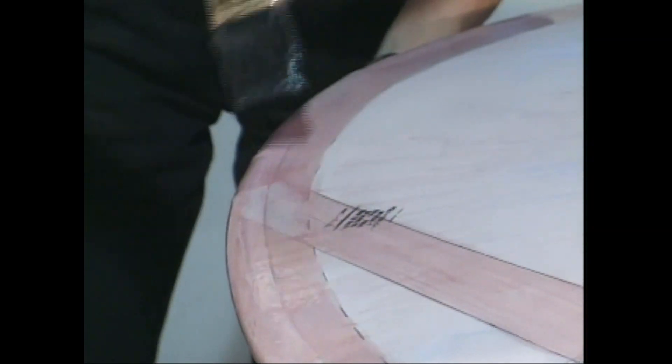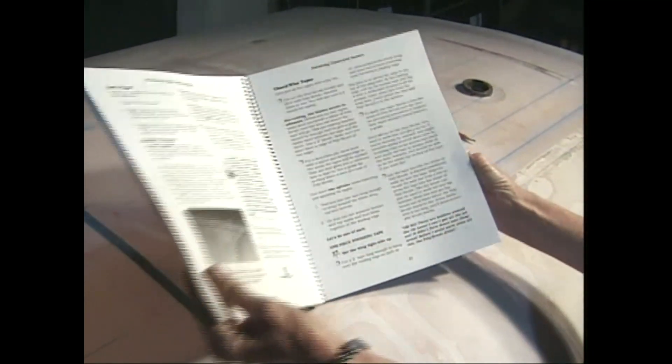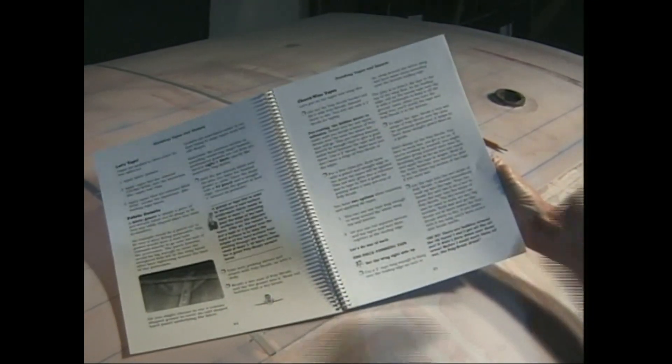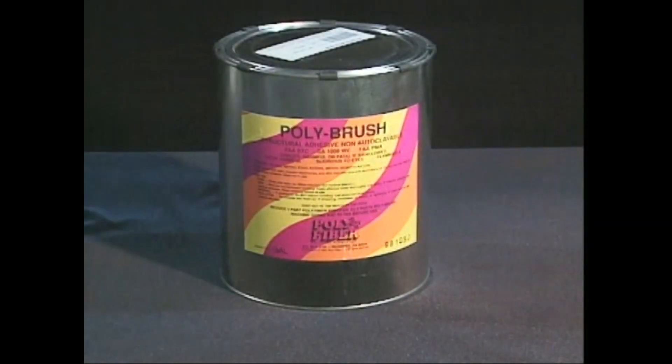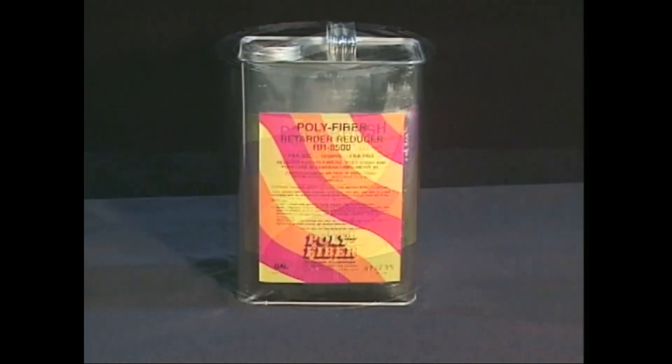You have a choice on how to apply this bed of polybrush. You can either brush it on or get out your spray gun and spray it on. In this video we are going to brush the bed coats on using the technique described on page 45 of your manual. Get out the polybrush bucket and fill it with polybrush thinned three parts polybrush to one part reducer.